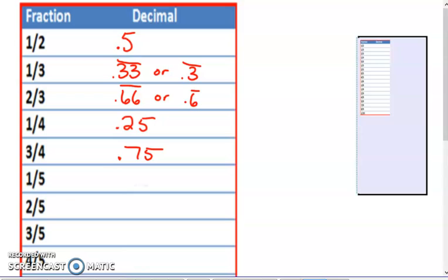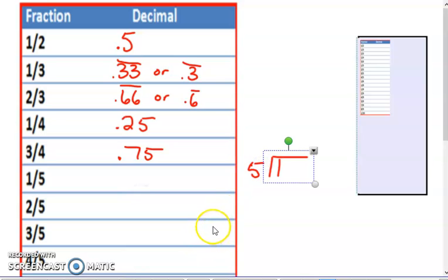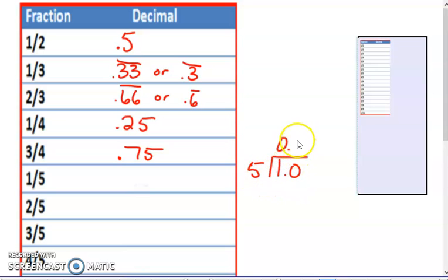So 1 fifth maybe you know that one but I'd like to go and show what that one looks like. So 1 divided by 5. 5 does not go into 1 but it does go into 10. So 5 times 2 equals 10 and that's it so 1 fifth equals 0.2.